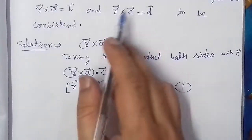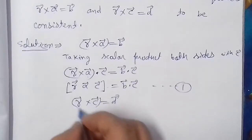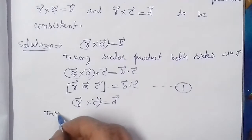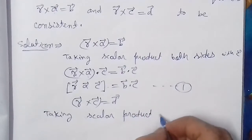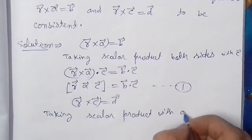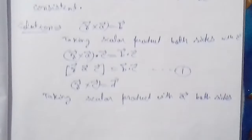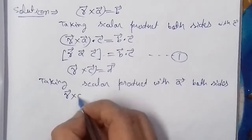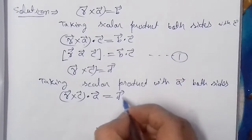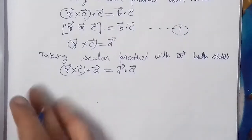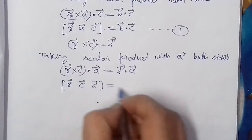अब equation number 2 दे रखी है: R⃗ × C⃗ = D⃗। इसको equation 1 जैसा बनाने के लिए, इसमें A⃗ से dot product लेंगे — taking scalar product both sides with A⃗। तो left hand side में (R⃗ × C⃗) · A⃗ हो जाएगा, जिसे scalar triple product में [R⃗, C⃗, A⃗] लिखेंगे, और right hand side में D⃗ · A⃗।